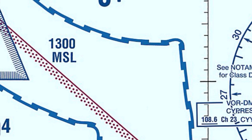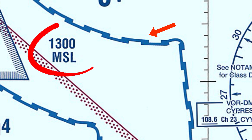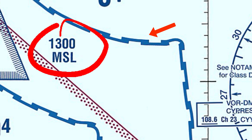The next class echo airspace is the offshore airspace, depicted by a blue zipper line on sectional charts. These airspace areas begin at specific altitudes — not always the same — for example, 1,300 feet MSL, and extend upward to ensure controlled airspace over international waters or remote areas. The primary purpose of offshore class echo is to provide ATC services for IFR traffic operating beyond domestic airspace boundaries, ensuring safe navigation and separation in areas without ground-based navigation aids.